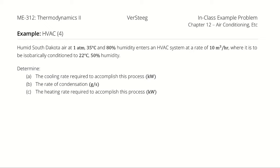Example problem number 4. Humid South Dakota air at 1 atmosphere, 35 degrees Celsius, and 80% humidity enters an HVAC system at a rate of 10 cubic meters per hour, where it is to be isobarically conditioned to 22 degrees Celsius and 50% humidity. We want to know the cooling rate if any, the heating rate if any, and the rate of condensation required to accomplish this process.